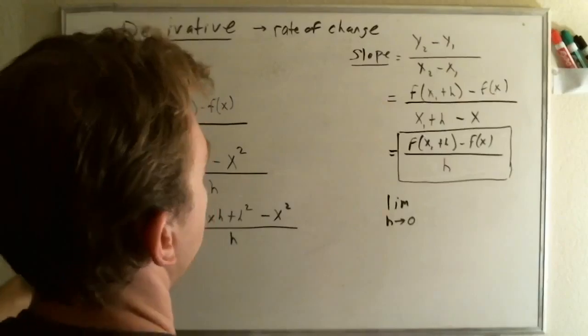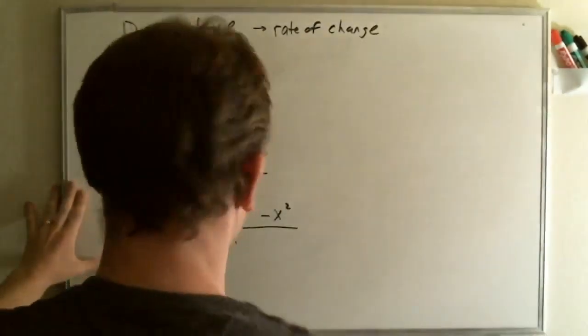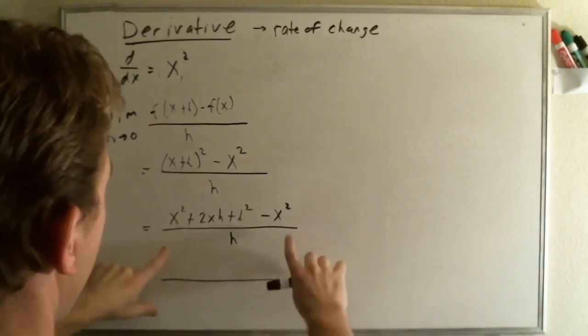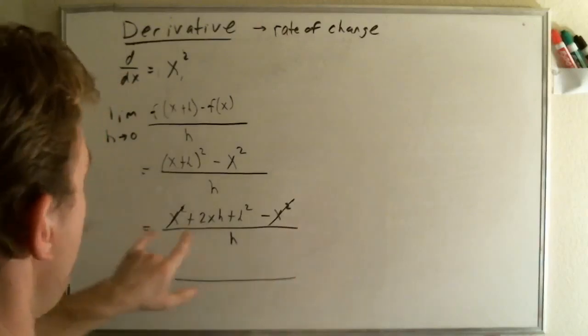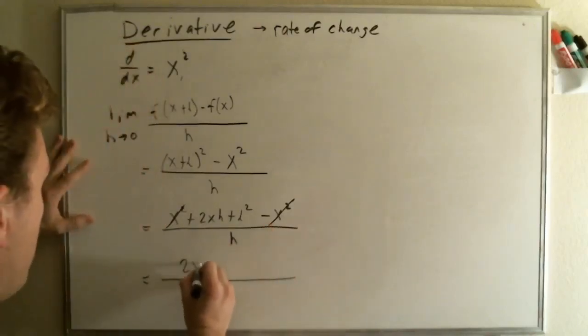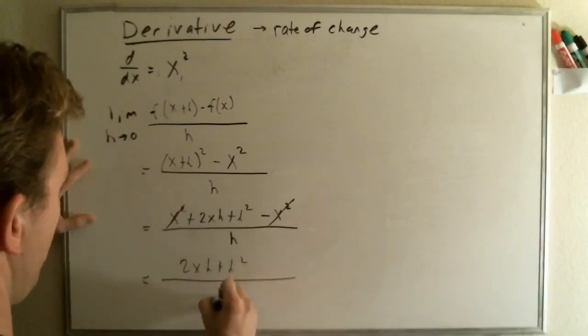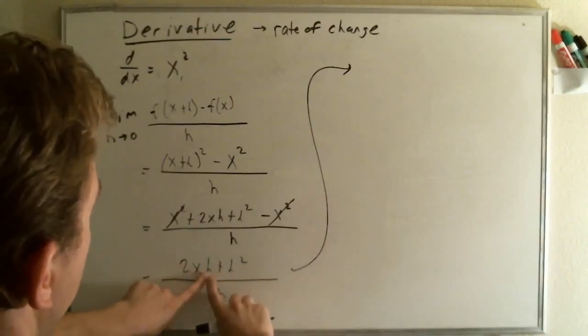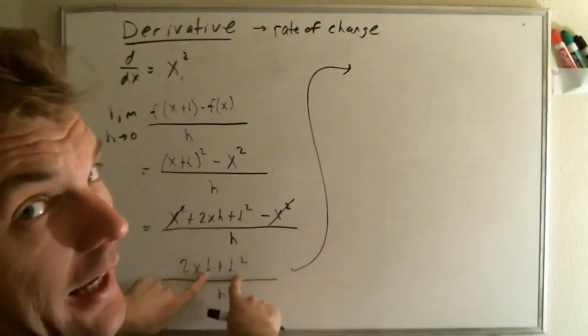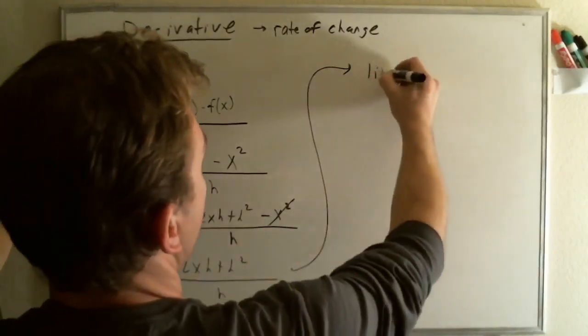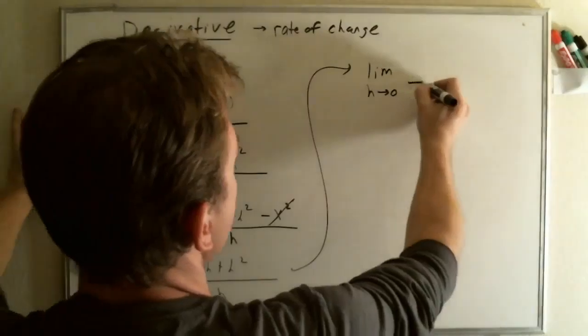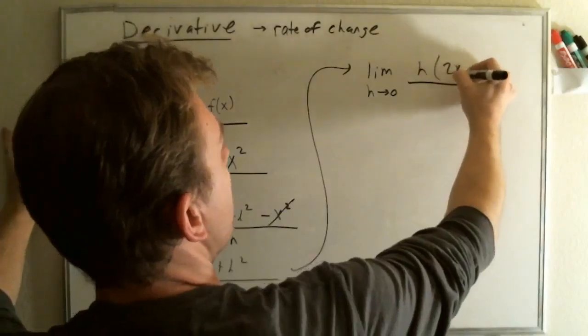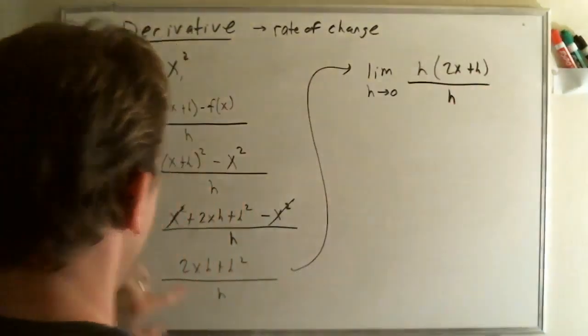So, we're looking at this, and we're saying, what can we do now? Well, this and this goes away because they're opposites, and we have 2xh plus h squared over h. So, if we take this idea and say, we have an h here and an h squared here, I can take out a nice h. So, remember, we want the limit as h approaches 0. We take an h out, and what do we have left over, which is 2x plus h over h.